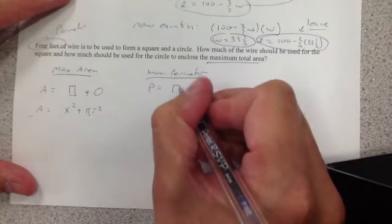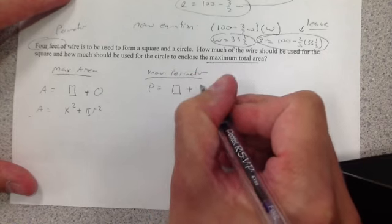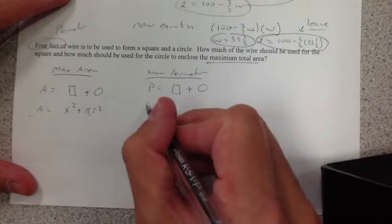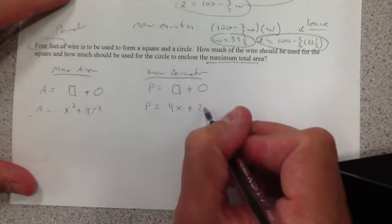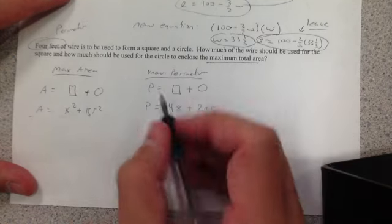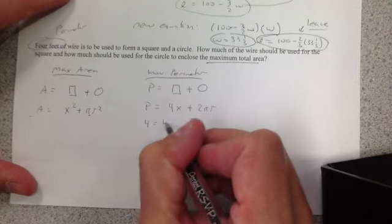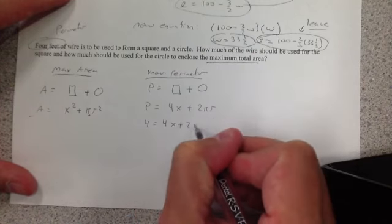I'm going to again add the perimeter of a square plus the perimeter of a circle. Well, what's the perimeter of a square? 4x. What's the perimeter of a circle? 2 pi r. And I know that's going to be equal to 4.